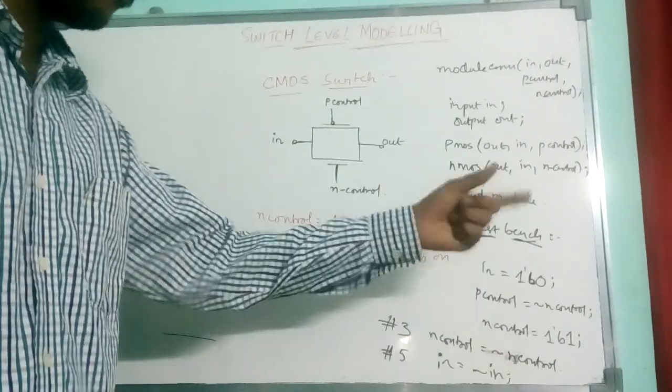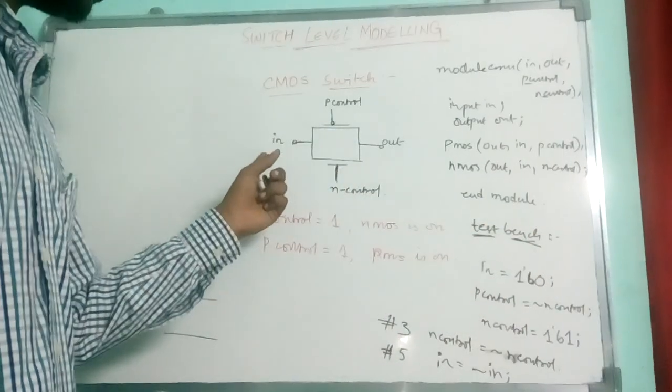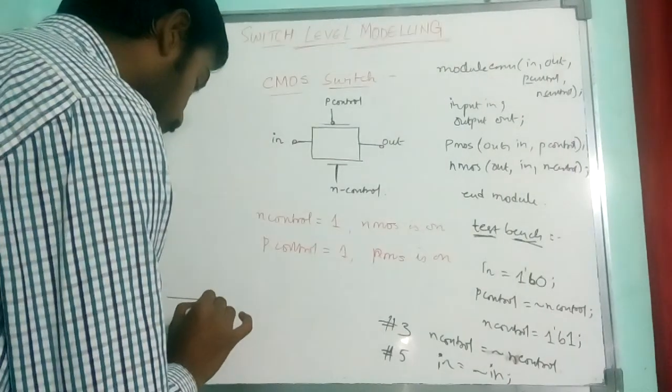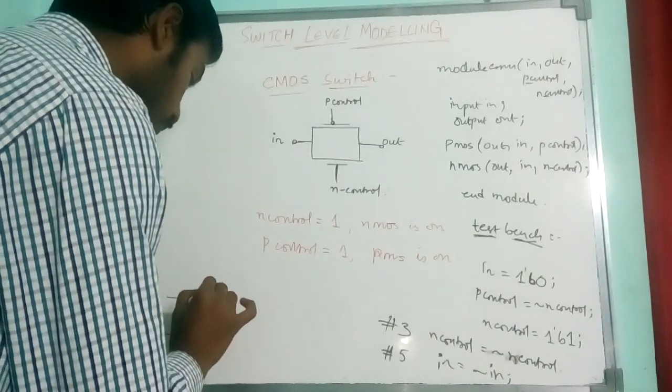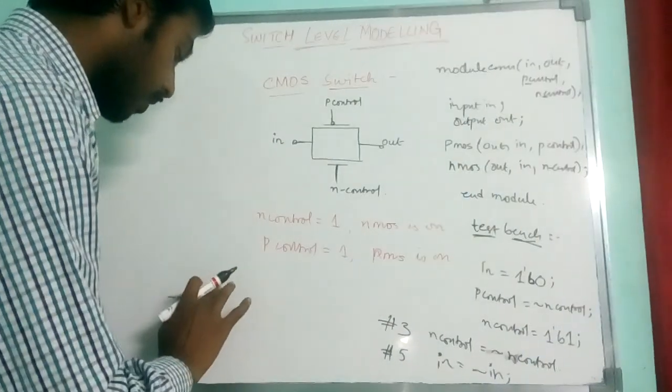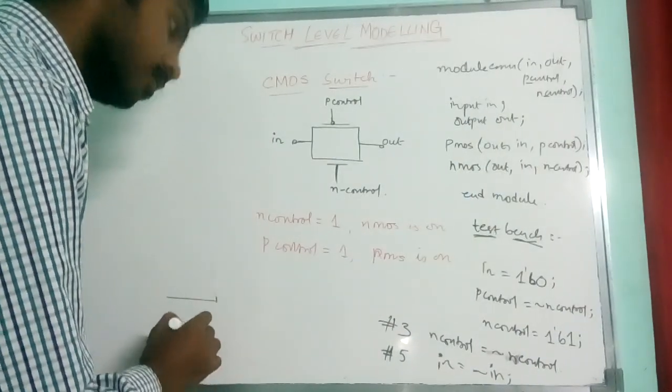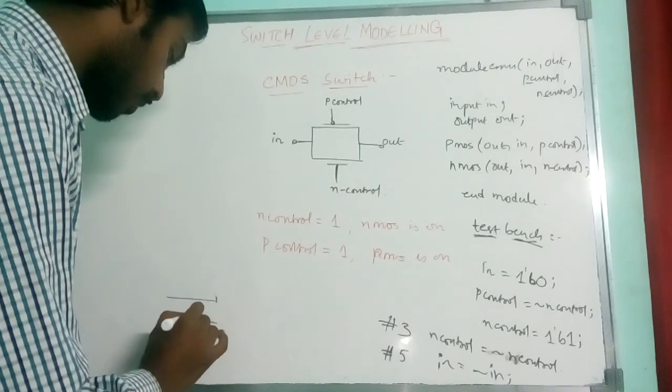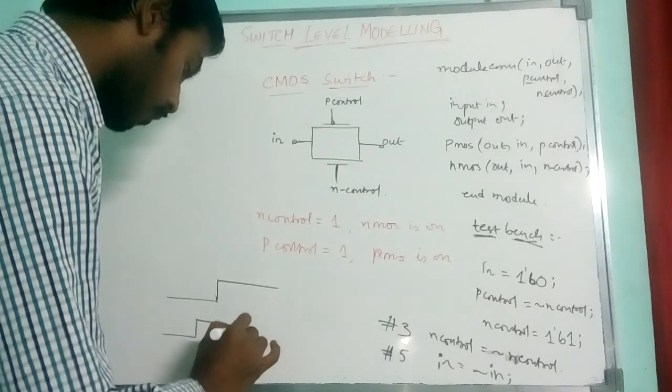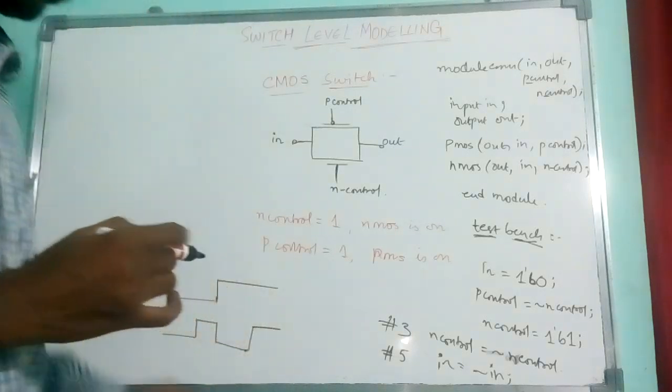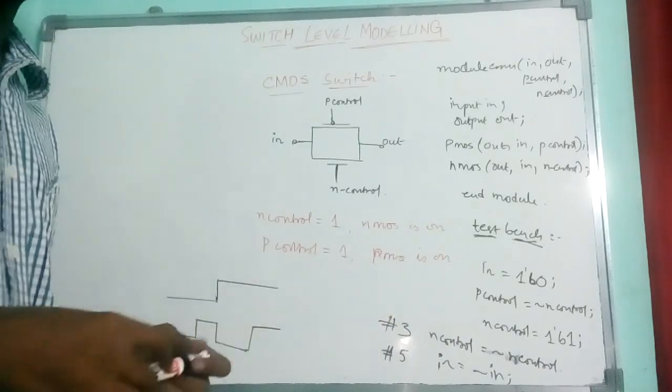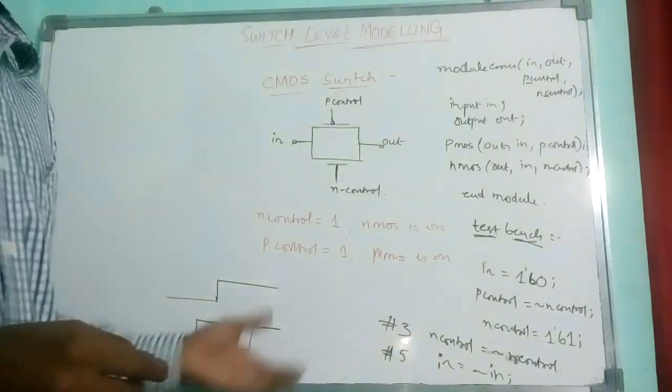Then after that, after 3 nanoseconds, N control, P control will be 0. When control is 0, now P control is on. For 3 nanoseconds this will be 0, after that is 1, again this will be high, speed low. Depending upon the time intervals which we give as time delay, the operation will be varying.